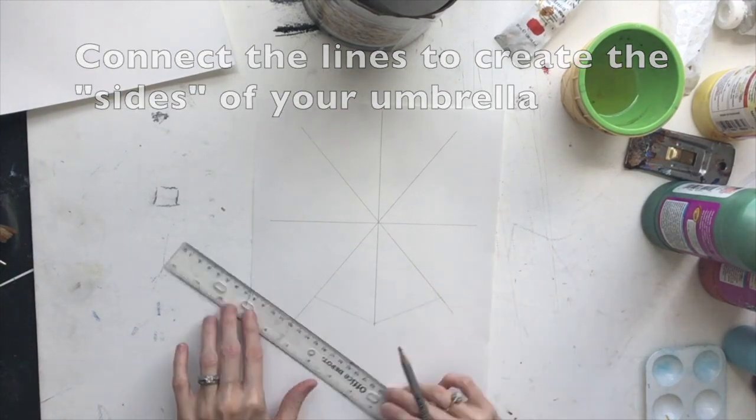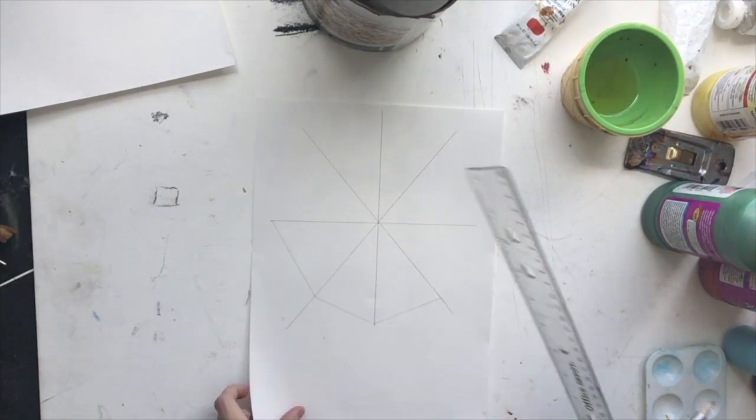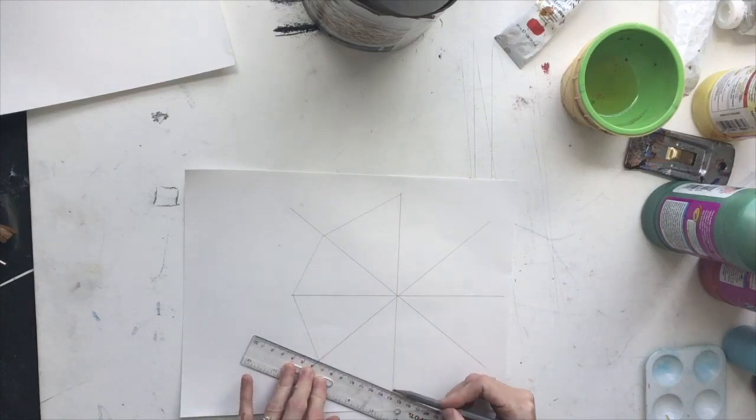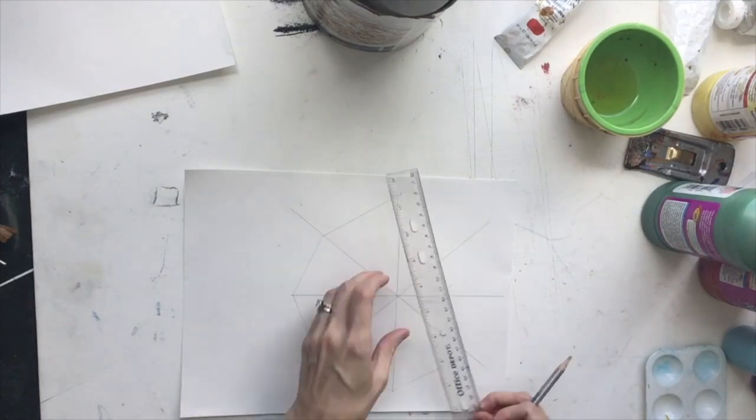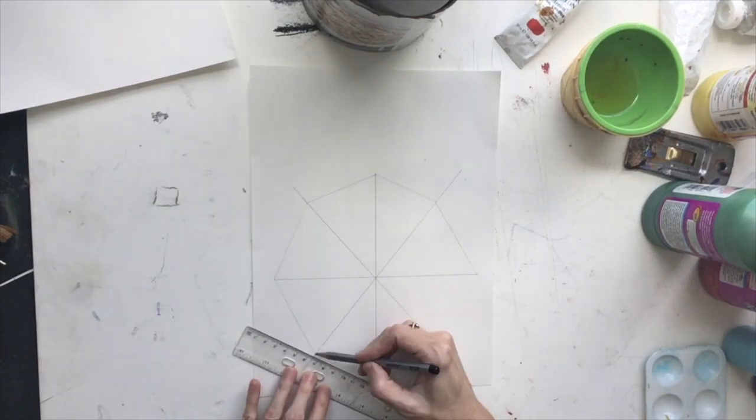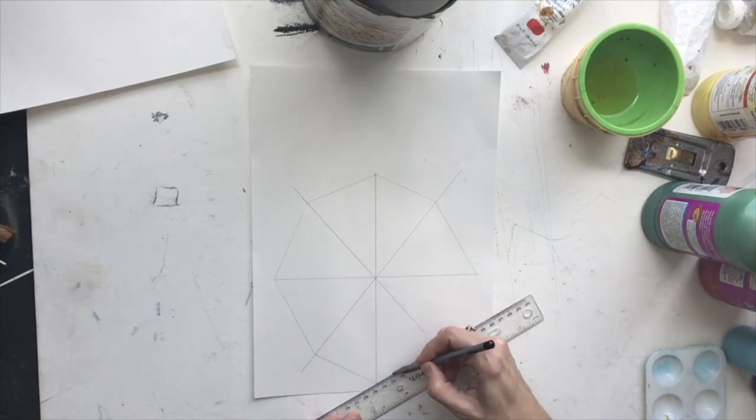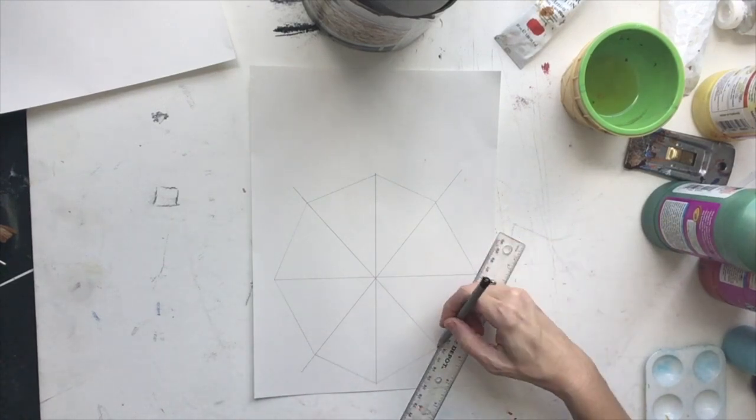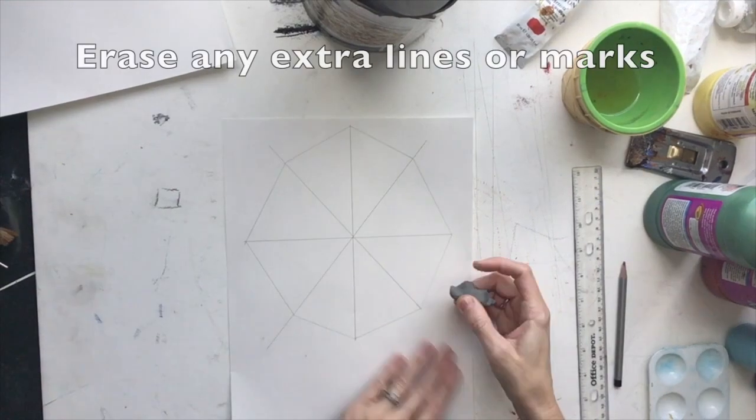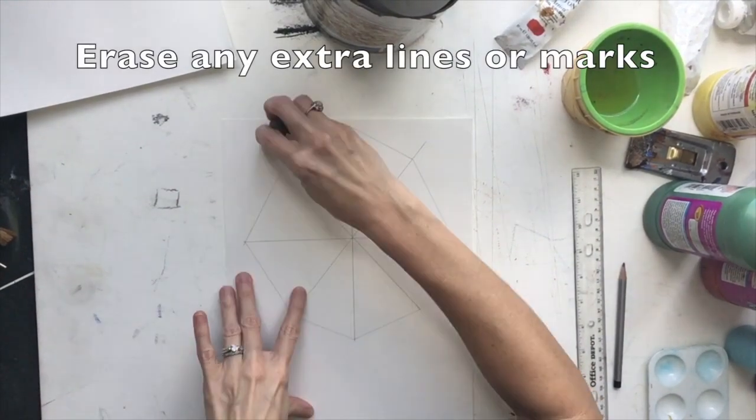Next, we're going to connect the lines that we just drew to make the edges or the sides of our umbrella. I'm erasing all my little extra lines.